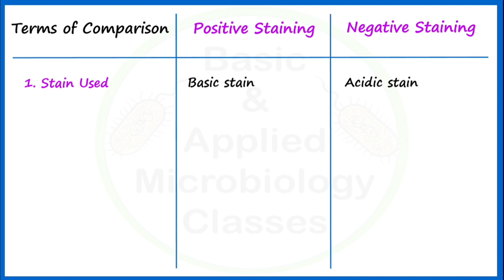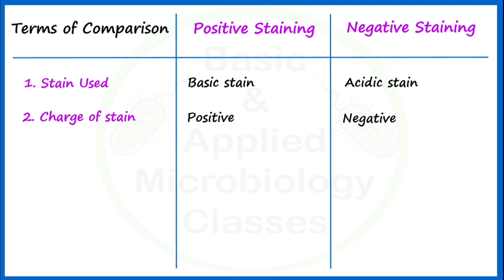The second point of difference is the charge of the stain. Since we use basic stain in case of positive staining, always remember basic stain carries a positive charge. And we use acidic stain in case of negative staining — acidic stain carries a negative charge.